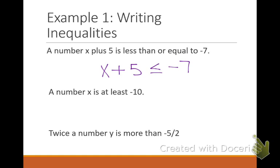A number x is at least negative 10. I need to know what inequality symbol stands for at least. Remember — if you have to be at least 18 years old to vote, all the ages that meet the requirement have to be more than that baseline, but you can also be exactly that number. So x is greater than or equal to negative 10. When we learn those keywords and what symbol each stands for, it becomes easier.